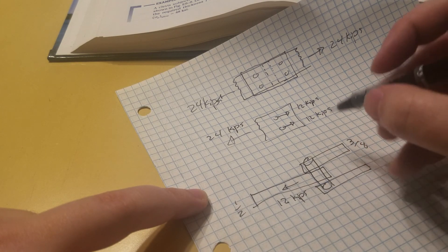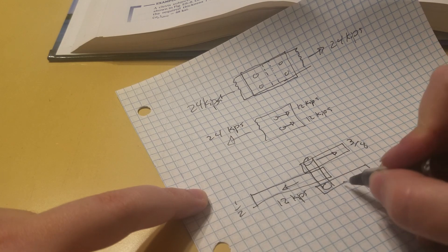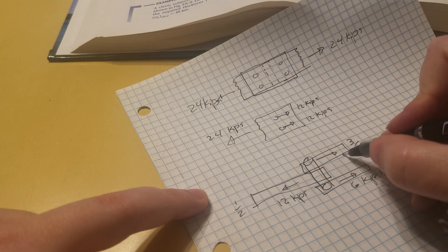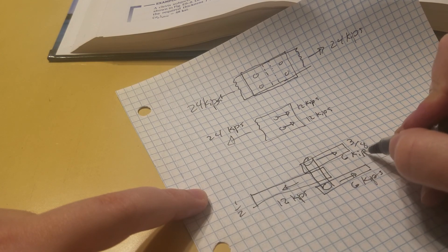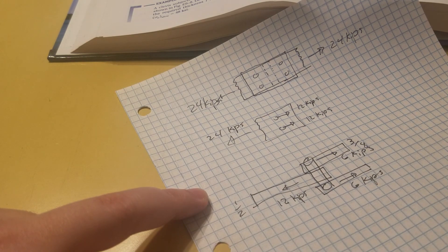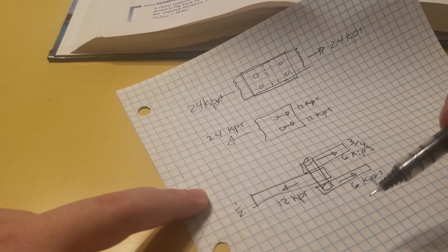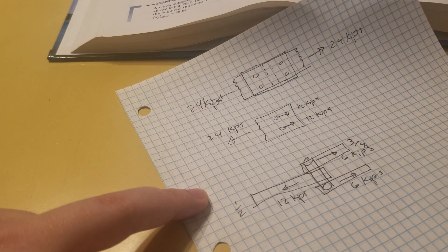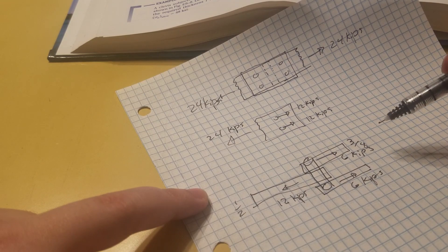So now again, this top part is splitting that six kips, six kips. Okay, and then there's another bolt. That's 12, six, six. So six times four, 24.